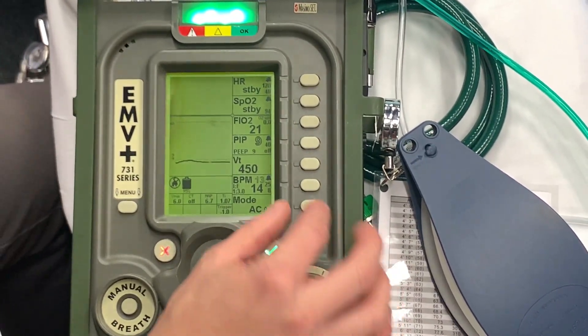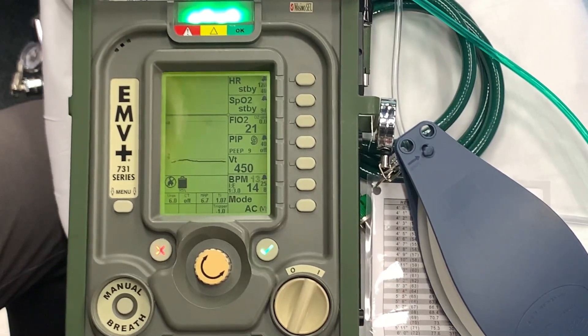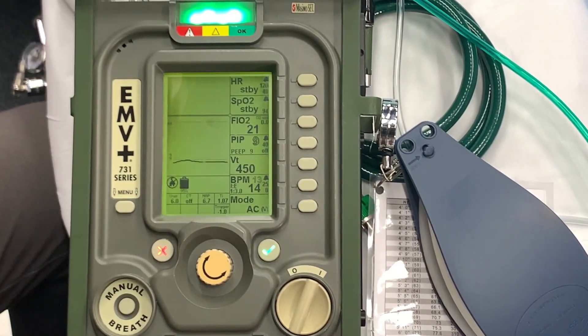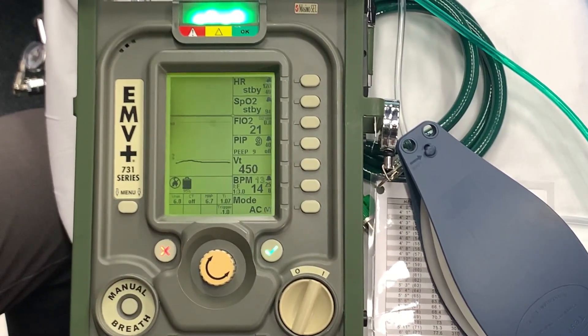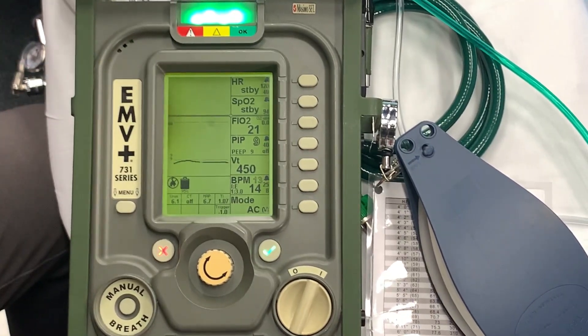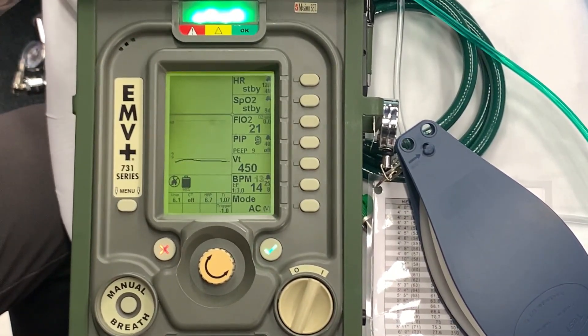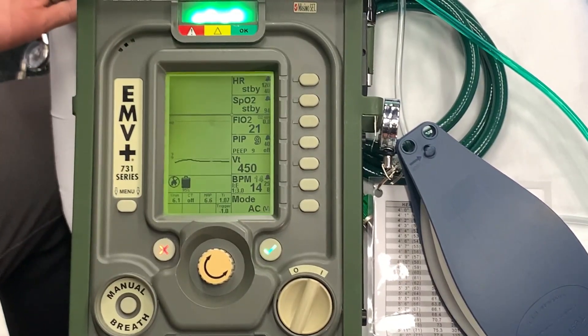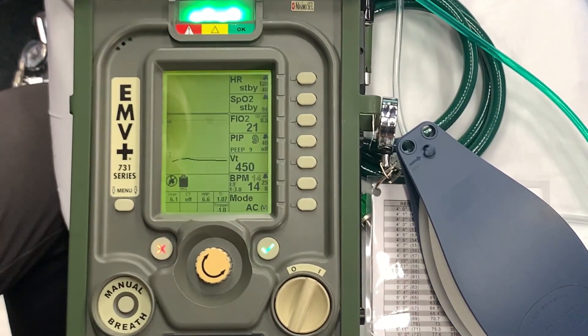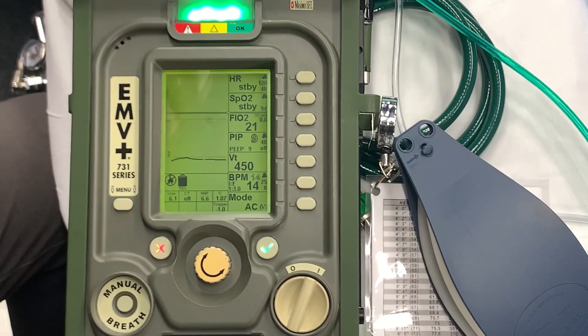So when we use the calculations to find out how much volume of air we want to deliver to our patient, we utilize a range of four cc's per kilogram all the way up to about eight cc's per kilogram of the patient's ideal body weight.